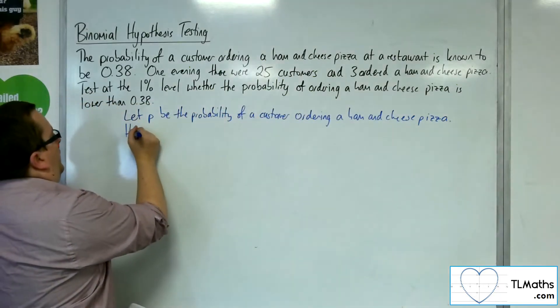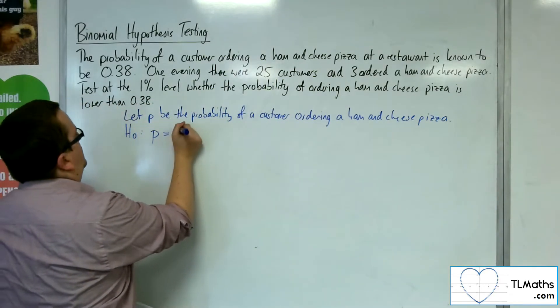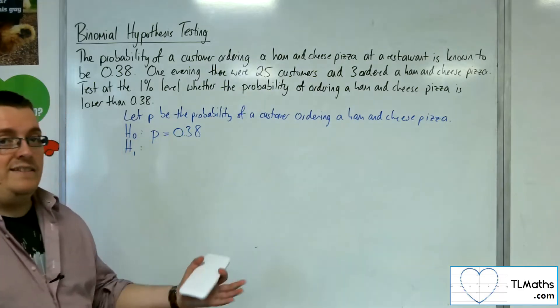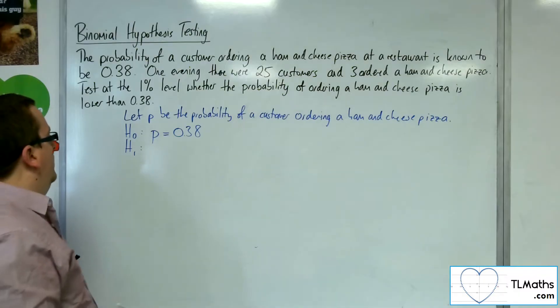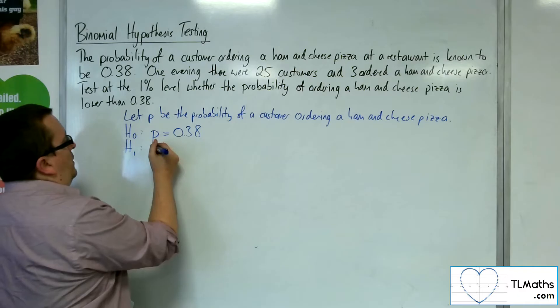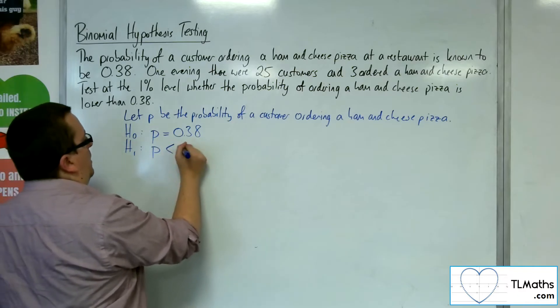Then the null hypothesis is that P is 0.38, the devil's advocate position. Says that the probability is as they say it is. We are going to test whether it's lower than 0.38, so the alternative hypothesis is the probability is lower than 0.38.